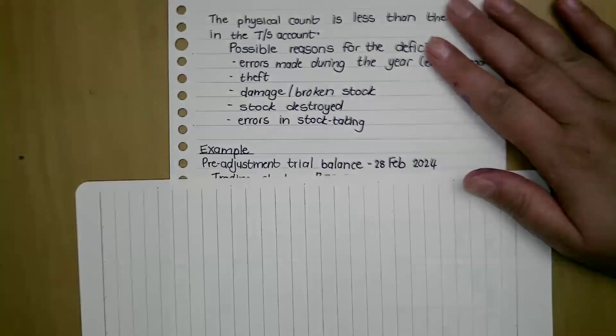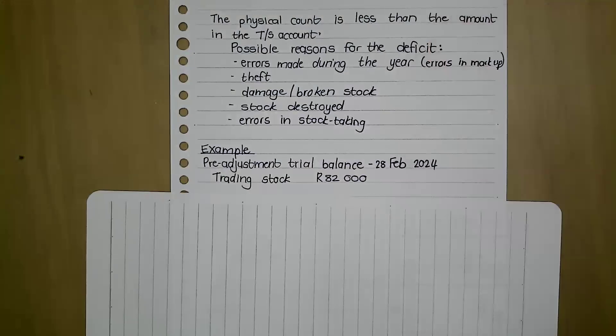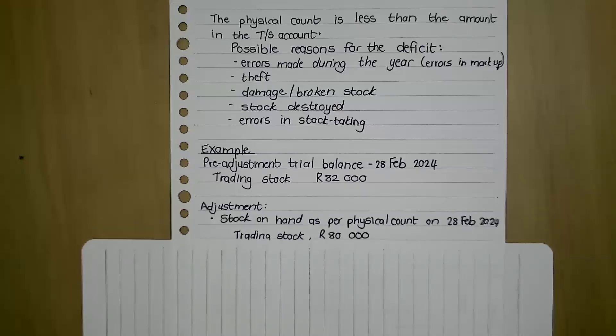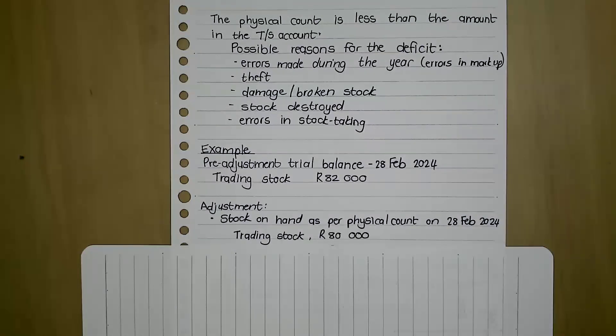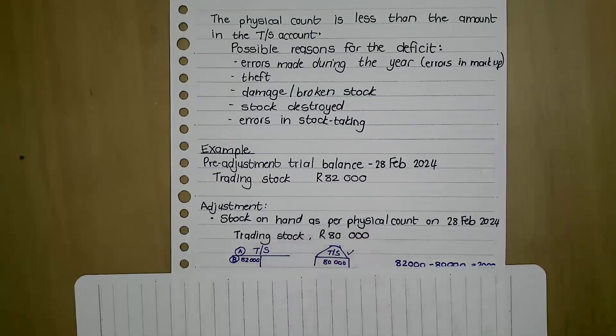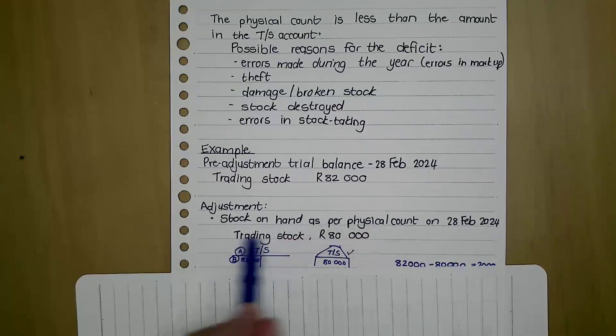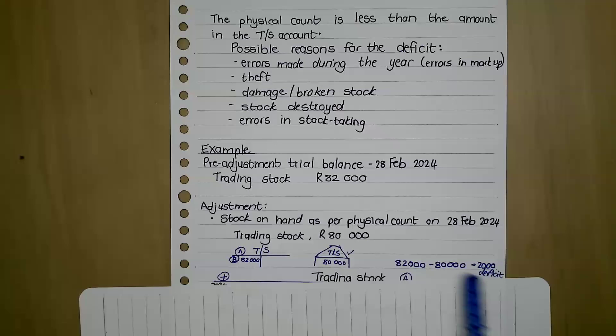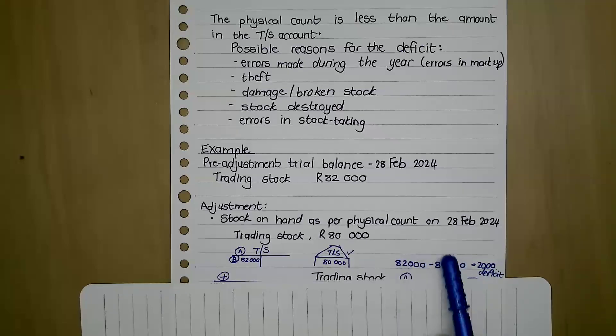Let's have a look at a typical exam type example. In my pre-adjustment trial balance on 28 February, the trading stock account is 82,000. Then the adjustment says stock as per physical count on 28 February: trading stock 80,000. Which means in my trading stock account in my books, I have 82,000 of trading stock, but in my warehouse I have 80,000. We know that this one is correct, we've counted it.